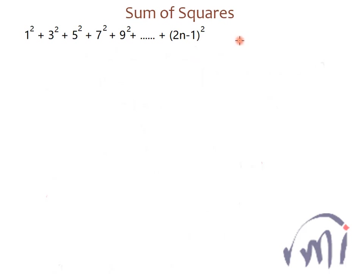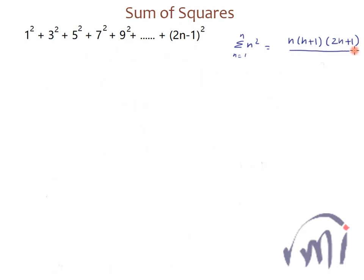In the last video we found the sum of squares from n equal to 1 till n, and this was equal to n(n+1)(2n+1) divided by 6. This was the sum of first n square numbers.